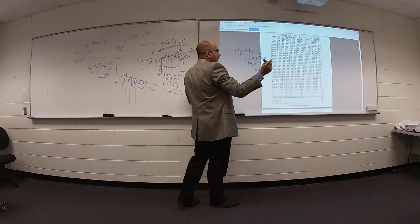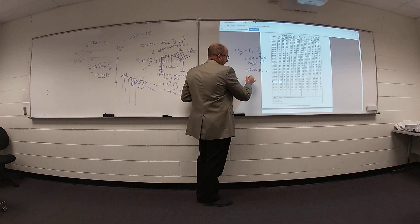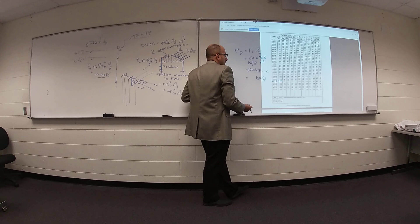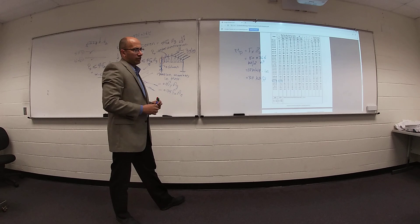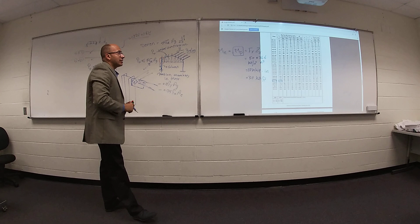What is the value? 3730 kip-inches. I prefer to convert it to kip-feet — divide by 12 — which gives 311 kip-feet. This value is your nominal moment, not your design moment. If you would like to get your design moment, we need to multiply this value by Φ, which equals 0.9.